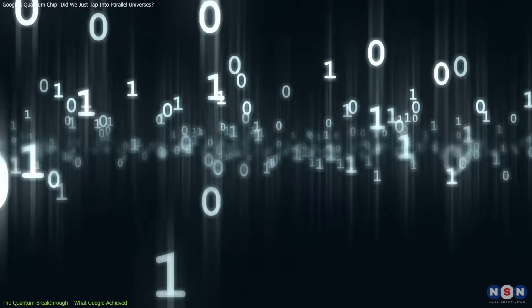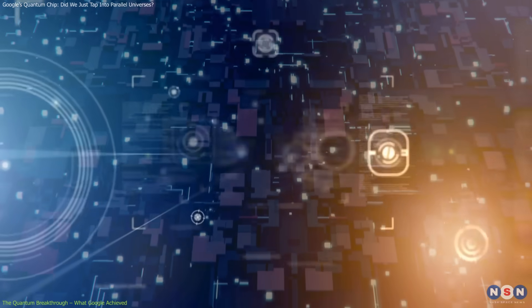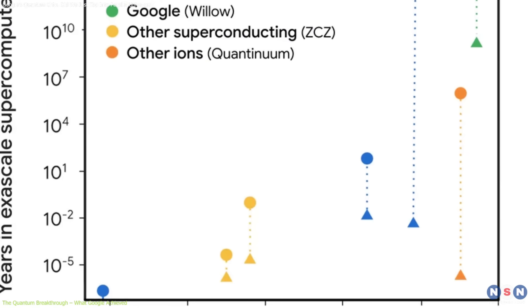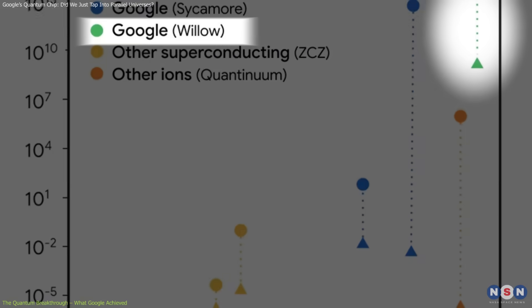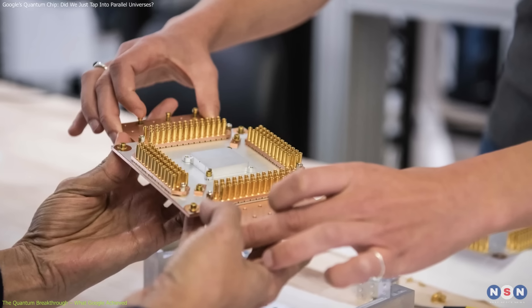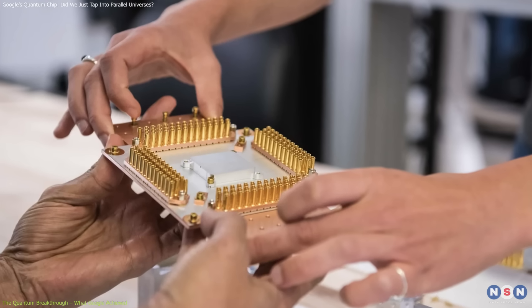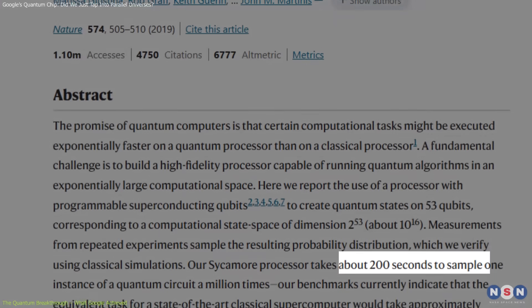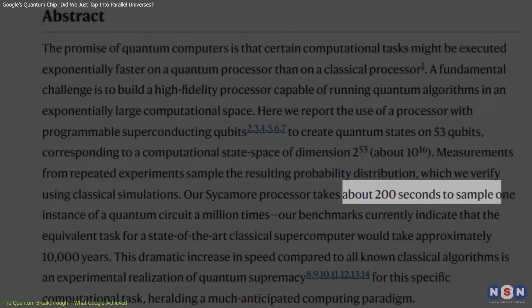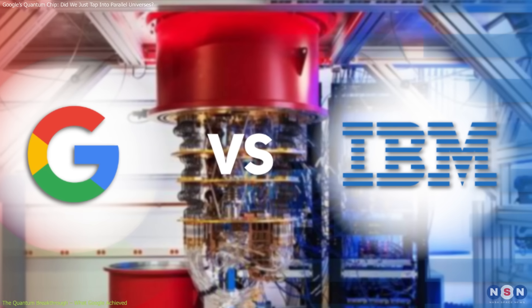This result isn't just about speed. It's about proving that quantum computers can tackle problems that classical computers find impossible. Scientists call this quantum supremacy. The point where a quantum system outperforms even the most advanced classical machines. Google first claimed quantum supremacy back in 2019 with a 50 qubit chip. That chip solved a problem in 200 seconds, which they said would take classical systems 10,000 years. IBM later challenged that claim, saying a classical computer could do it in days.